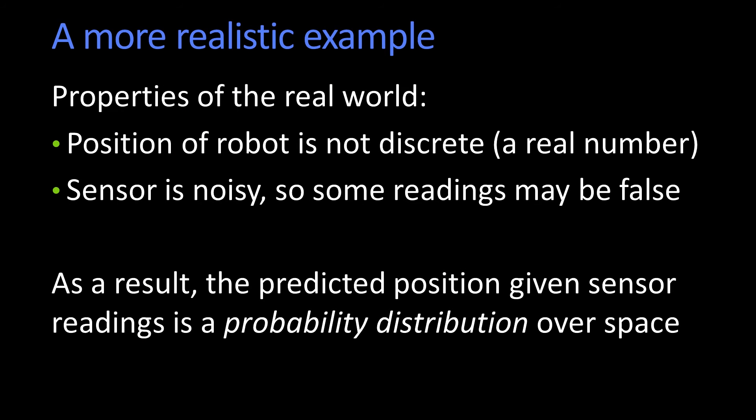And furthermore, it's really unlikely that, depending upon its measurements, it will have a nice Gaussian belief about where things are. Its belief is going to be whatever it is. So we're going to make use of a particle filter to do this.